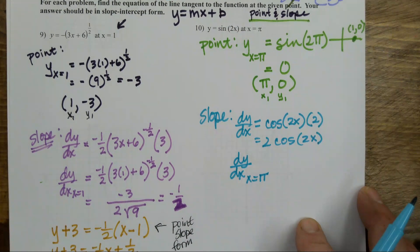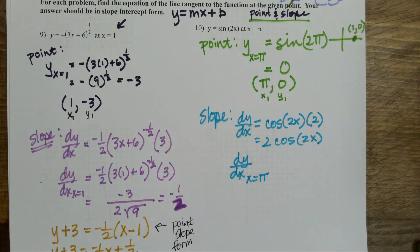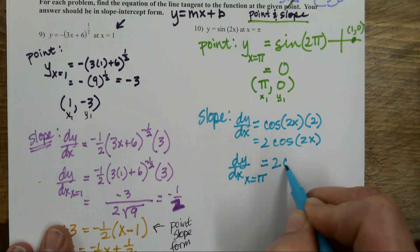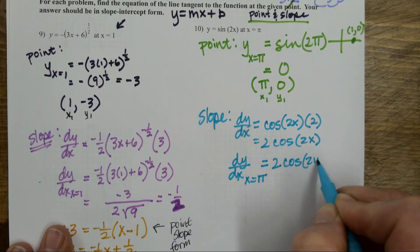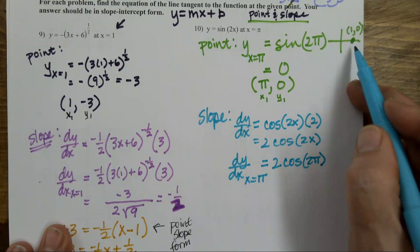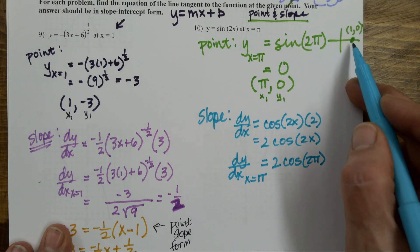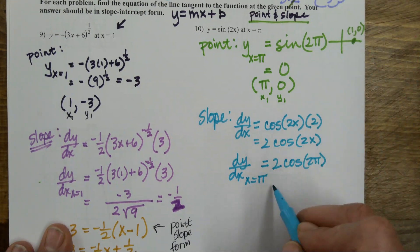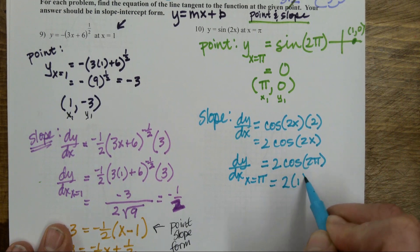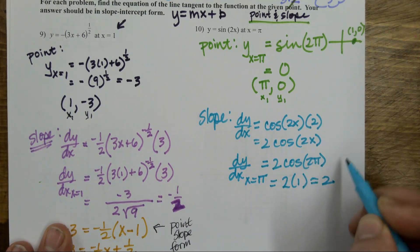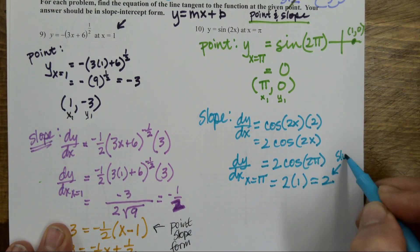I'll go ahead and figure that out at x equals pi, because that will give me my slope. That's 2 times the cosine of 2 pi. Same spot — this time I'm looking for the cosine, which equals 1. So this equals 2 times 1, or 2. There's the slope.